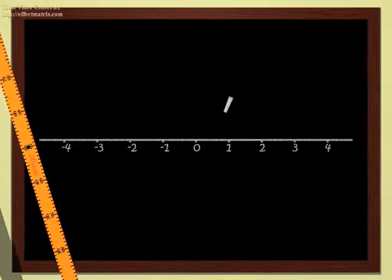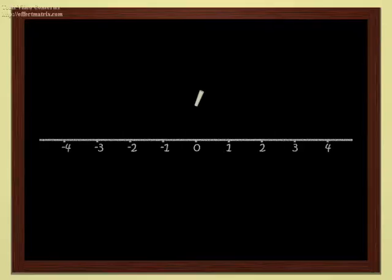Just as we can add numbers, we can add points. Here is a red point on the line and another blue one. Let's add these two points. We get the green point. One plus two equals three. When the red and blue points move, the green point, which is the sum, must move too.